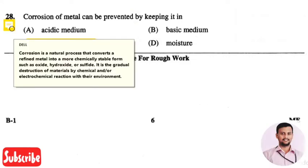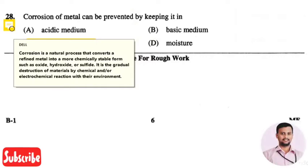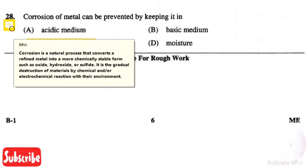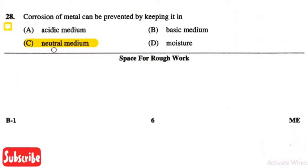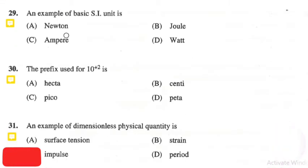Corrosion is a natural process that converts refined metals into more chemically stable forms such as oxide, hydroxide, and sulfide. It is a gradual distortion of a material by chemical or electrochemical reaction with the environment. This can be prevented by keeping the metal in a neutral medium.